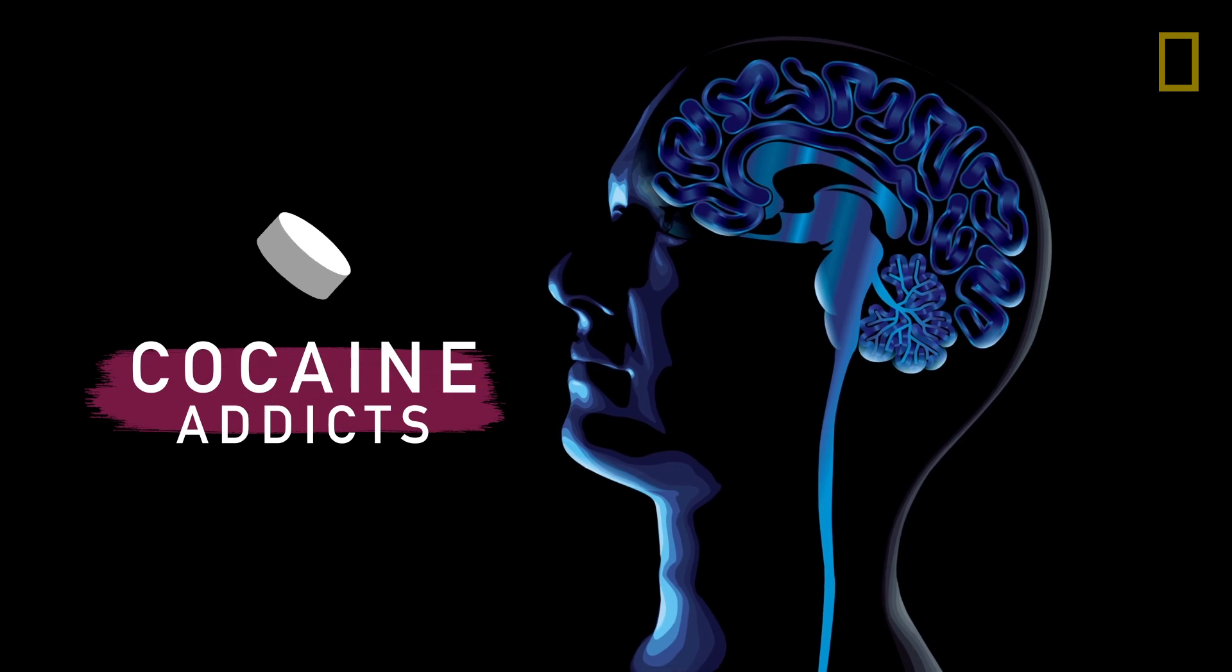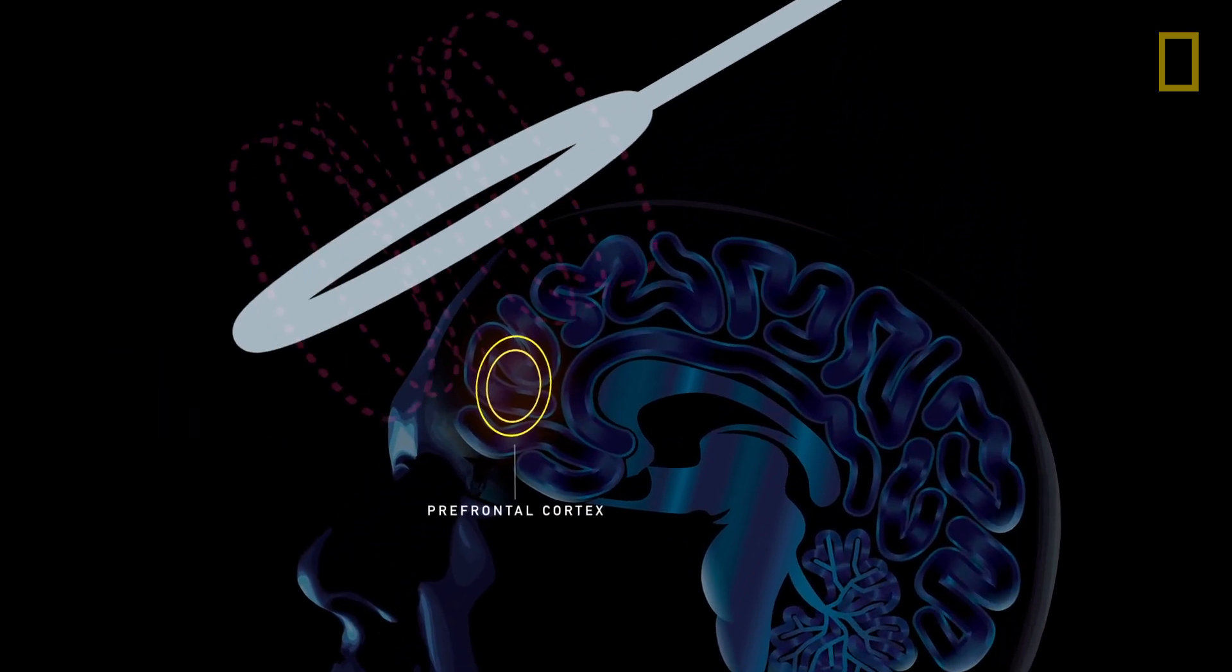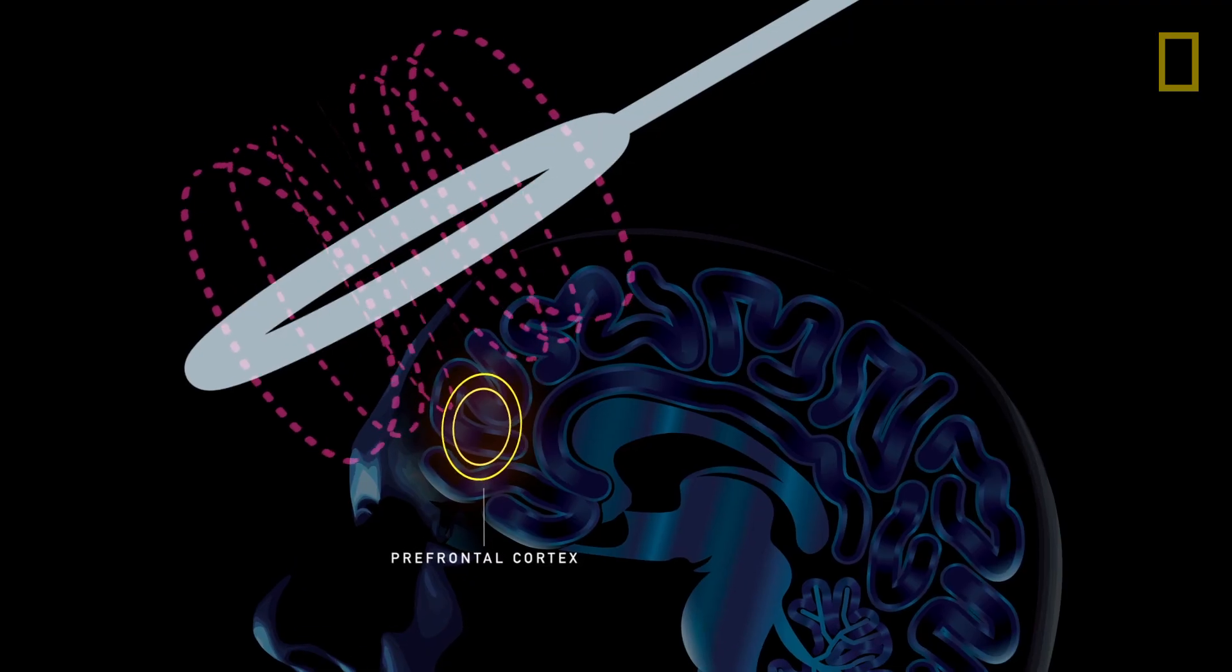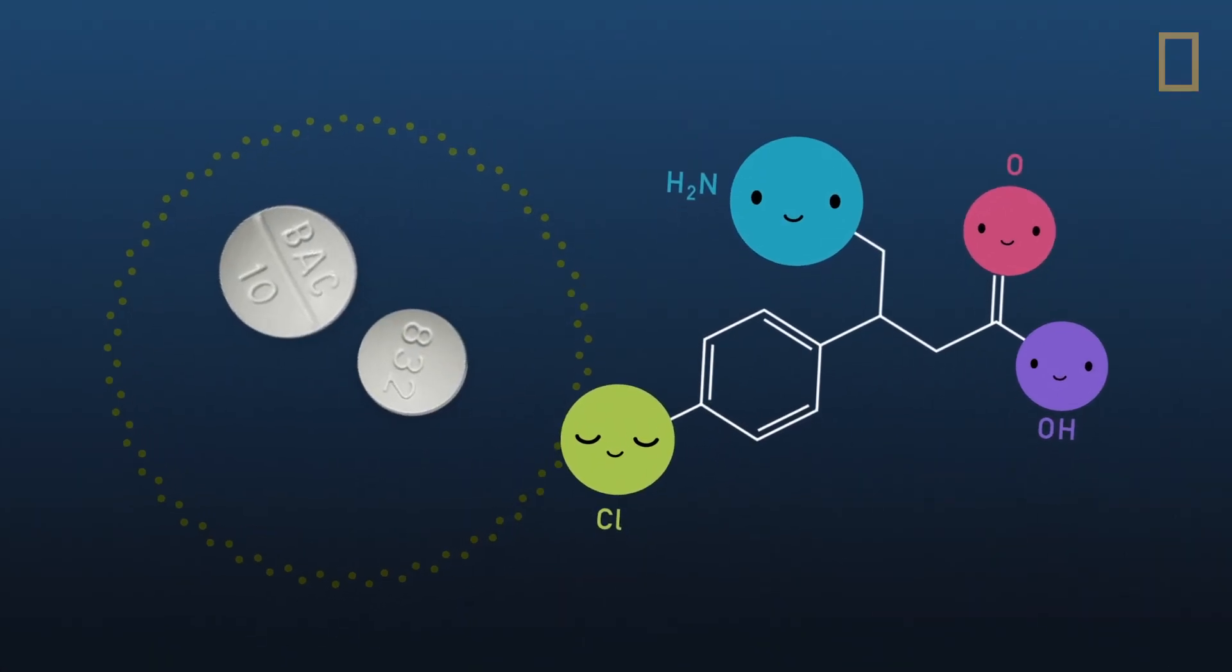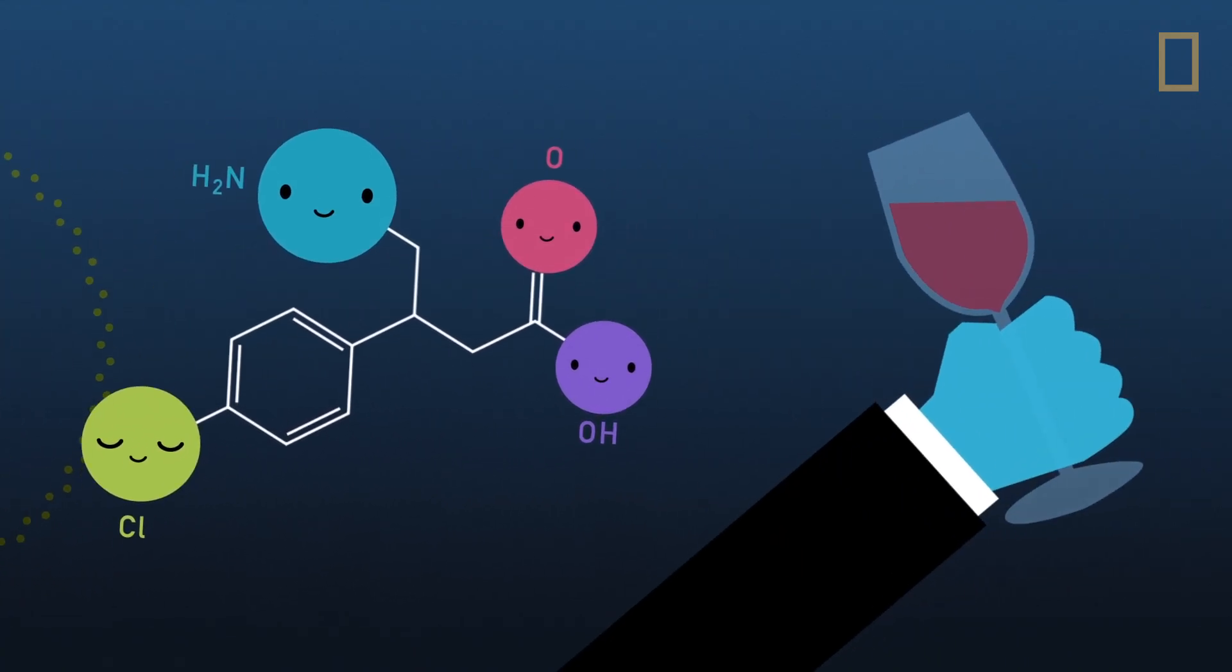Cocaine addicts have been able to shut off their cravings abruptly when electromagnetic pulses are applied to their prefrontal cortex. A drug hitherto used to treat muscle spasms called baclofen has shown promise for treating alcohol dependence.